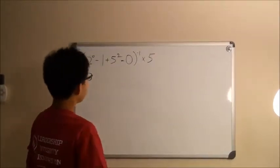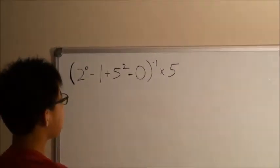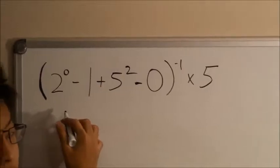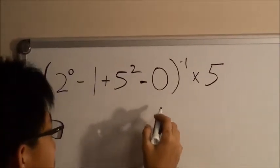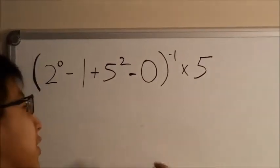In the problem, it wants us to evaluate this expression: 2 to the power of 0, minus 1, plus 5 squared, minus 0, all of it to the power of negative 1, and multiply by 5.